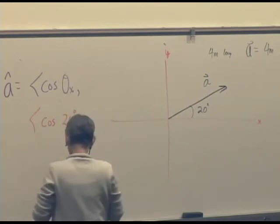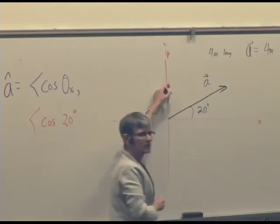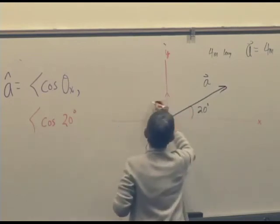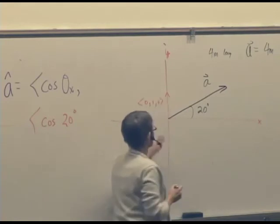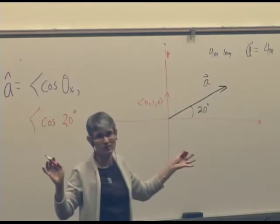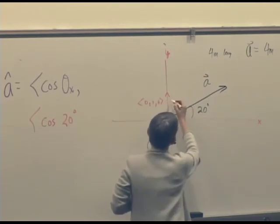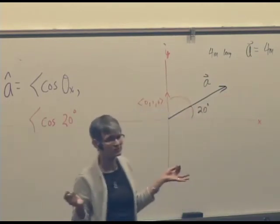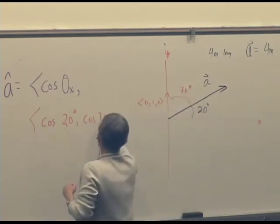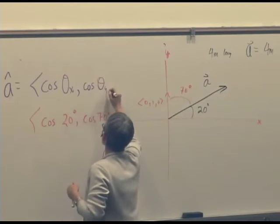What's the y-component? Well, you start with a unit vector (0, 1, 0). Any unit vector pointing along an axis just has one non-zero component equal to 1, so we can find that by inspection. What angle do we have to rotate that through to get to this? That angle is 70 degrees. So that's cosine 70 degrees, or generally cosine theta sub y.